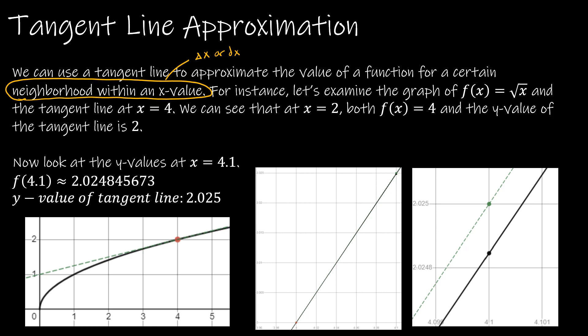Let's look at the graph of f of x equals radical x. I've already graphed it for you. We can see at the tangent line at x equals 4 — that's the x value that we're worried about — we can see that both the function itself, which is the black line, and the tangent line have a y value of 2. Both of the y values are the same.